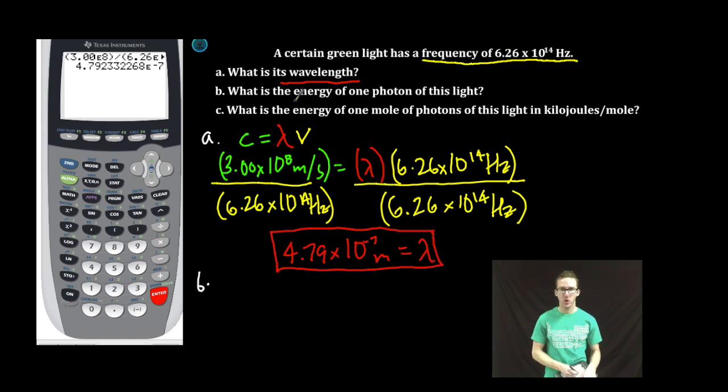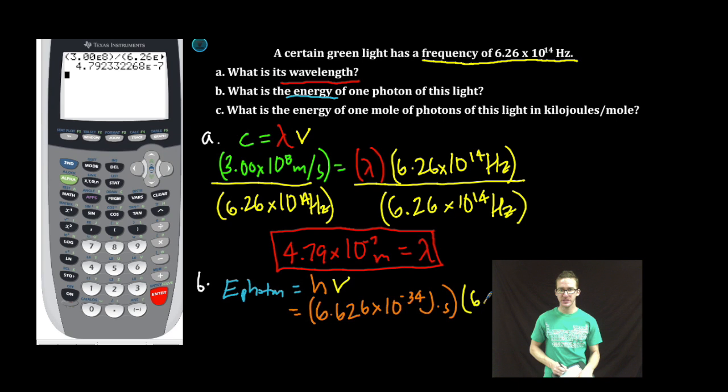Part B, what is the energy of one photon of this light? Energy of a photon is equal to Planck's constant times frequency. Planck's constant, 6.626 times 10 to the negative 34 joules times seconds times our frequency, 6.26 times 10 to the 14 hertz.